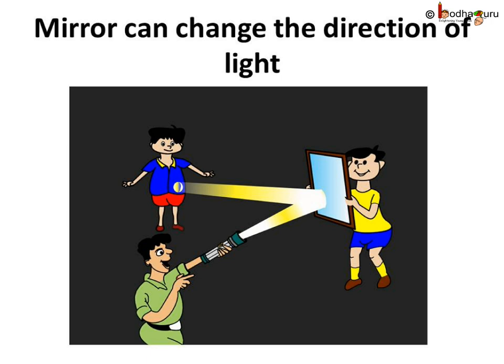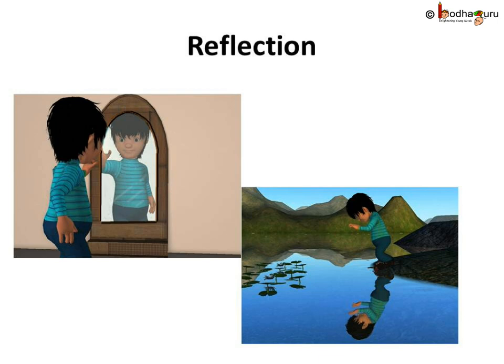What do we conclude now? The mirror changes the direction of the light that falls on it. Not just the mirror — any other polished and shining surface like a shining stainless steel plate can change the direction of light. This change of direction by a mirror, or the light coming back after hitting a smooth plain surface, is called the reflection of light. The image we see in the mirror is called the reflection.